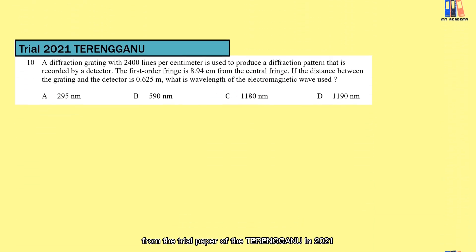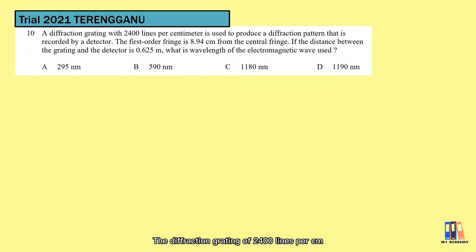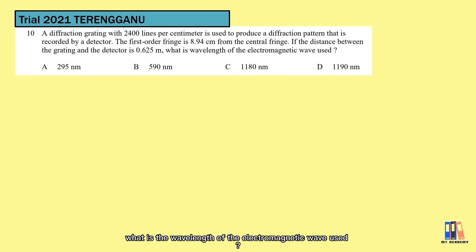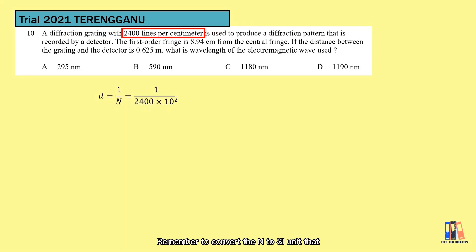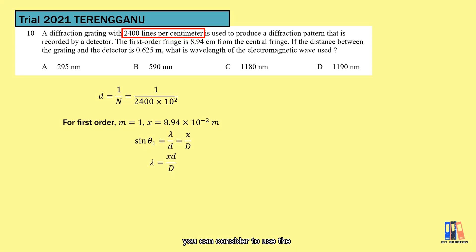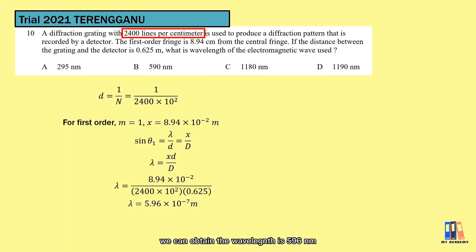Let's look at one more question from the trial paper of Terengganu in 2021. A diffraction grating of 2,400 lines per centimeter is used to produce a diffraction pattern. The first order fringe is 8.94 cm from the central fringe, and the distance between the grating and the detector is 0.625 m. What is the wavelength of the electromagnetic wave used? Remember to convert n to SI units: n = 240,000 lines/m, so d = 1/240,000 m. Applying the formula λ/d = x/D and substituting the values, we obtain a wavelength of 596 nm.